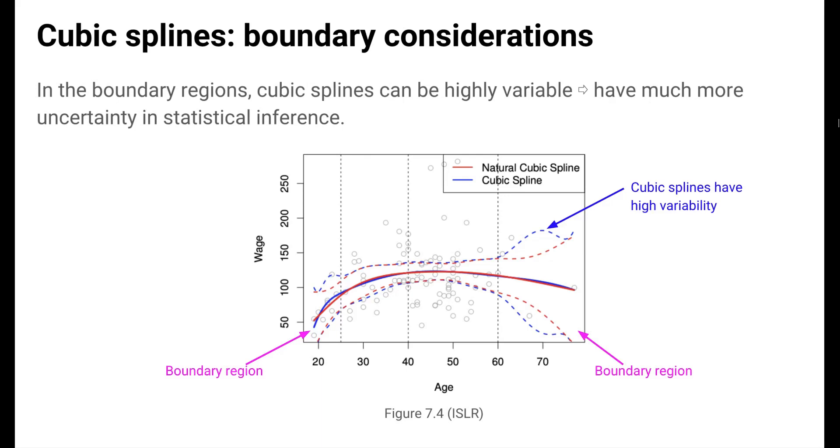One problem that arises with cubic splines is that in the boundary regions, which are the regions lower than the smallest knot and higher than the largest one, cubic splines can be highly variable. That is, we have much higher uncertainty or standard errors when we use statistical inference tools such as confidence intervals. This is illustrated in this figure from the ISLR book. In the boundary regions, the dotted blue lines give pointwise confidence intervals for the blue cubic spline fit. We see that these bands are quite wide, indicating that the predictions from the cubic spline are highly uncertain in this region.